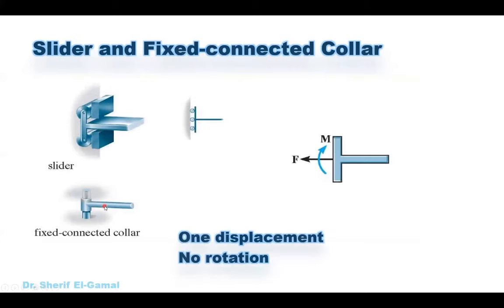Also we have something called the slider and fixed connected rollers. For these two supports, both of them allow for vertical displacement, therefore there is no reaction in the vertical direction. They do not allow for horizontal displacement, therefore there is a force in the X direction. They also do not allow for rotation about the Z axis, and therefore we have a moment. In the case of a slider or fixed connected roller we have two unknowns, but unlike the pin support — which has two unknown forces — here we have one unknown force and one unknown moment.